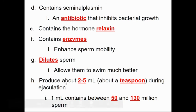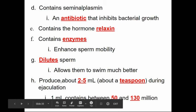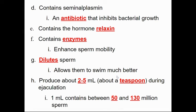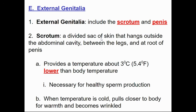Typically in a normal ejaculation, the volume is two to five milliliters — about one teaspoon. One milliliter can contain anywhere between 50 and 130 million sperm, so there is a huge number released. But only one will fertilize the egg, and most don't make it there.